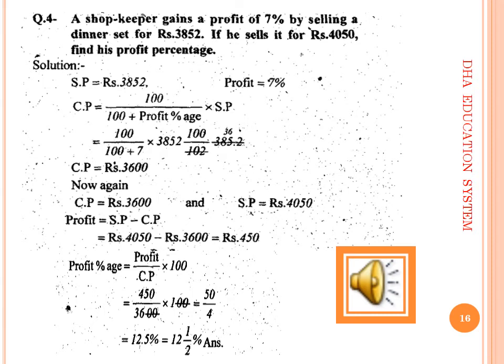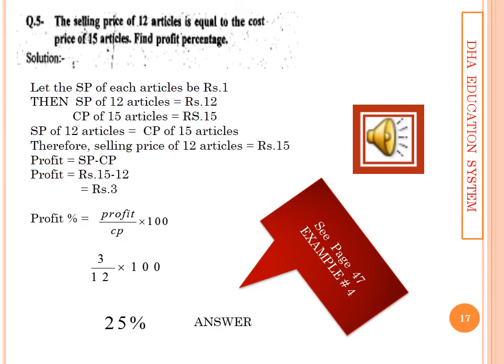Question 4: A shopkeeper gains 7 percent profit by selling a dinner set for rupees 3,852. If he sells it for rupees 4,050, find his profit percentage. First, use the CP formula with SP and profit percent given to find CP = rupees 3,600. Then for the second part, apply profit = SP minus CP, which gives the profit value. Finally, profit percent = profit over CP into 100. Always divide by CP, not SP.